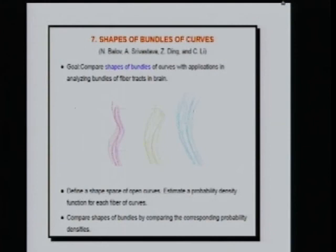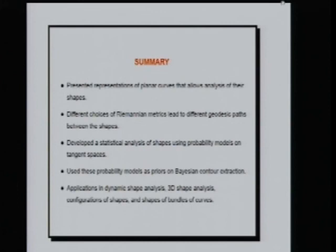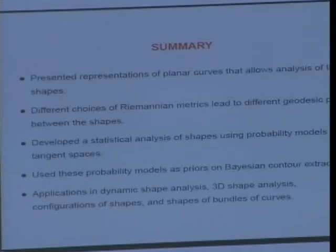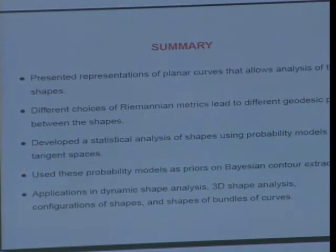To summarize: we started with analysis of planar curves, looked at different representations and metrics. The basic tool needed for any choice of metric is geodesic calculation. Once you have that tool, you can compute mean shapes, covariances, and probability models, enabling Bayesian estimation using shape priors. Applications include dynamic shape analysis, facial surface shape analysis, configuration of shapes, and bundles of curves. Once you have a good tool for analyzing shapes, you see applications everywhere.